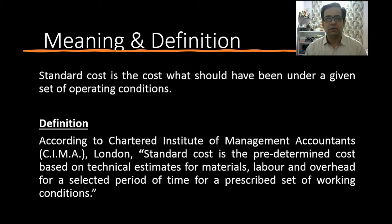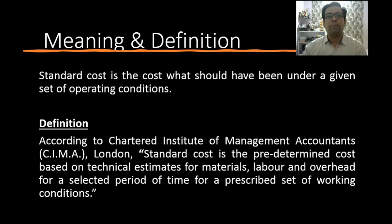This difference between actual cost and standard cost is what we call variance, and that is exactly what we are supposed to find here. If my cost becomes 9.5 rather than 10, I'm spending less — that's a favorable variance. But if my actual cost becomes 10.25, I'm spending more — that's an unfavorable variance. Therefore, standard costing is also commonly known as variance costing, because our main job is to calculate variances.